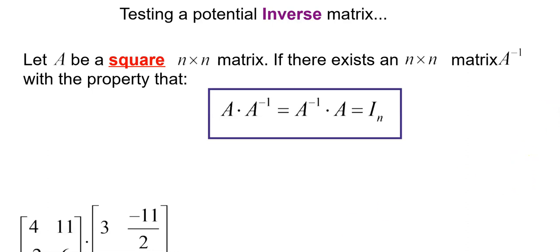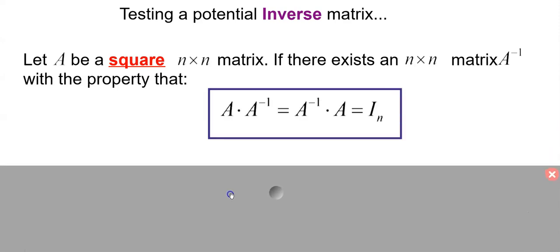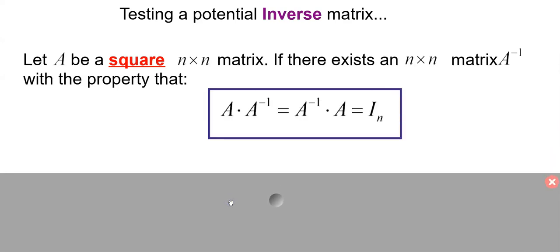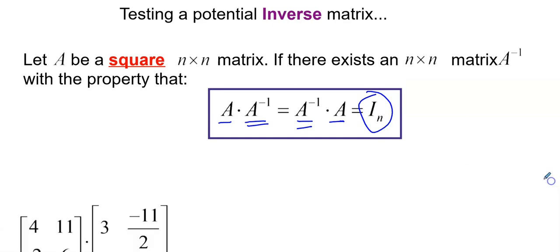To test a potential inverse matrix: first, it has to be square. If there exists an n by n matrix with an inverse, then the matrix times its inverse — or the inverse times the matrix — gives you the identity matrix. So if you multiply two matrices and you mysteriously get the identity matrix, you've discovered that those two matrices are, in fact, inverses of each other.